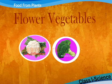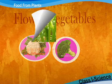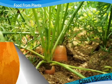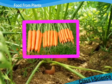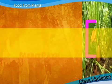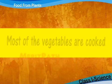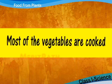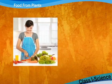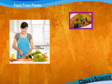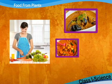Some vegetables can be eaten raw. For example we can eat a carrot raw. Most of the vegetables are cooked. For example we cook brinjal and we cook potato.